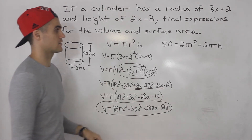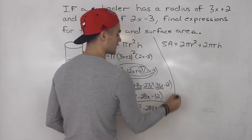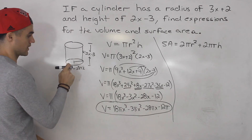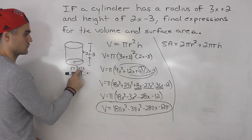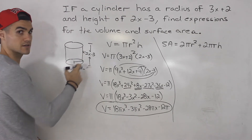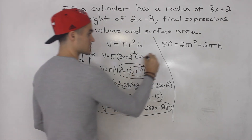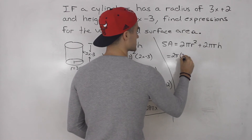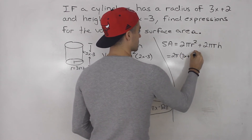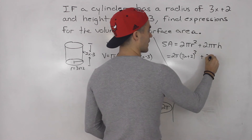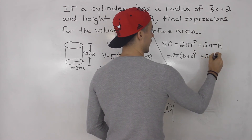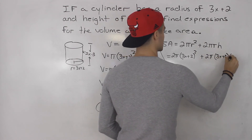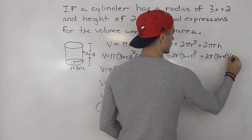Now moving on to the surface area of the cylinder we have 2 pi r squared plus 2 pi r h. So again we're just going to sub in 3x plus 2 for the radius and 2x minus 3 for the height. So here we would have 2 pi times 3x plus 2 squared, plus 2 pi times 3x plus 2 times the height of 2x minus 3.